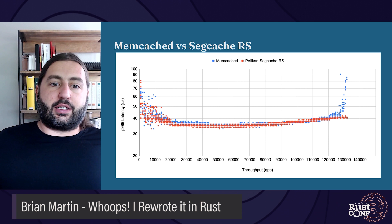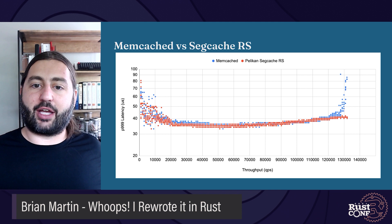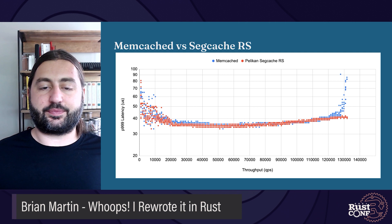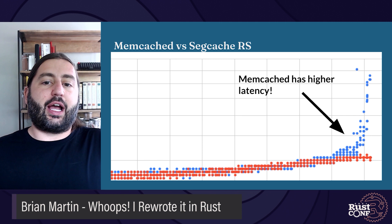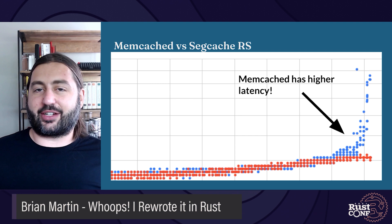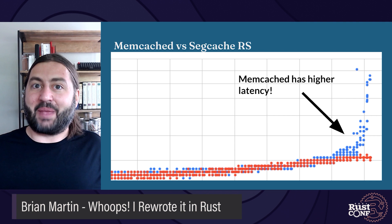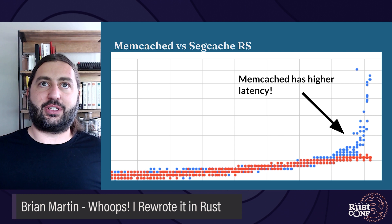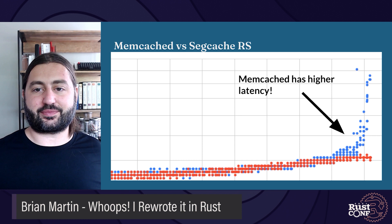Here I'm comparing upstream Memcache in blue with the Rust implementation of Pelican Segcache in red. Zooming in on the higher throughputs, we can see that upstream Memcache actually has higher latency than this Rust implementation of the cache. This is super cool because Memcache is really, really fast — so it's neat to see that we can actually meet or exceed that performance with a Rust implementation.